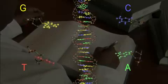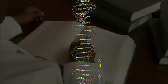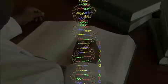So if you know one side of the step on the ladder, you automatically know the other side as well. Step by step, and three billion letters long, this is the formula for a human being.